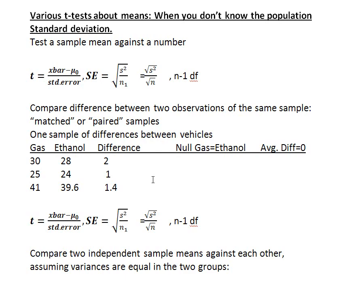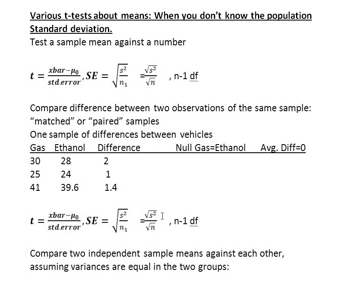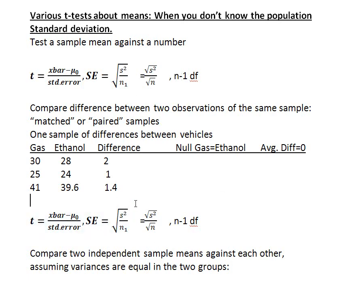We calculate the sample average difference as our x̄, and our null hypothesis says μ₀ equals 0. We divide by the standard error, calculated precisely the same way as for one sample — because in reality we do have one sample: one sample of differences. The degrees of freedom are n minus 1, where n is 25 cars giving 25 differences, so we'd have 24 degrees of freedom. Seen from that viewpoint, it becomes a pretty simple exercise.